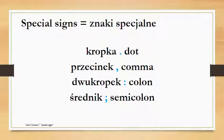The next one is the colon. The Polish name for it is more straightforward. It's called dwukropek, which means two dots more or less. Dwukropek.